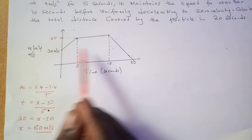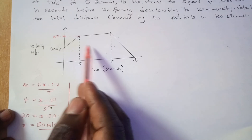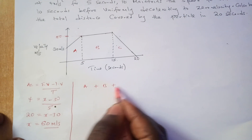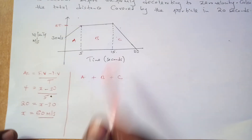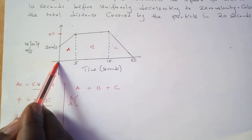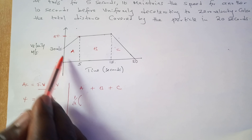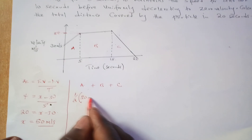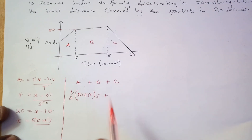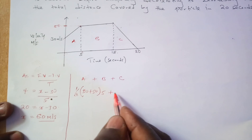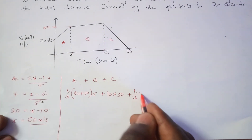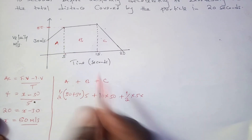Now with 50, I can calculate all three areas. Divide them into A, B, and C. Area A is a trapezium: half times the sum of the parallel sides (30 plus 50) times height 5. Area B is a rectangle: length 10 times width 50. Area C is a triangle: half times base 5 times height 50.